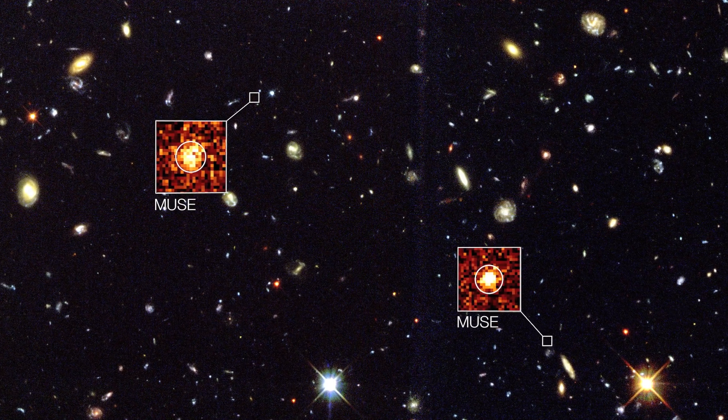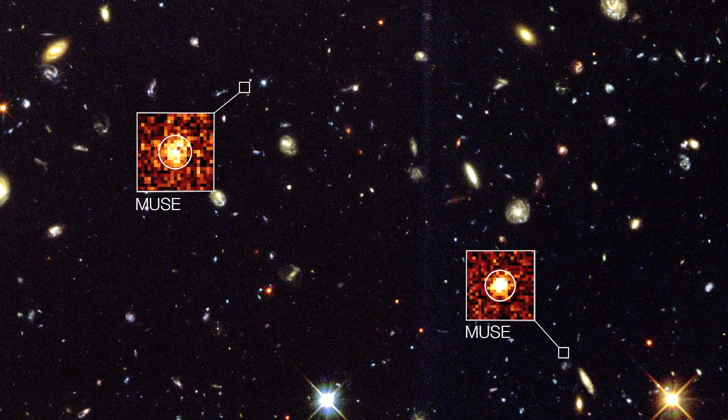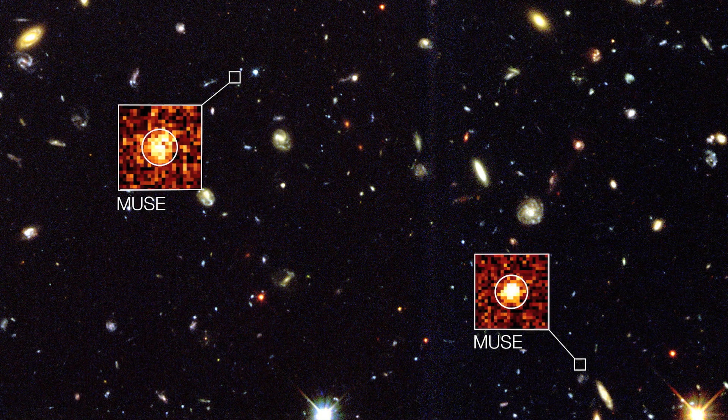Even with a much shorter exposure time than Hubble, MUSE revealed more than 20 very faint objects that Hubble didn't see at all.